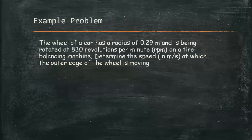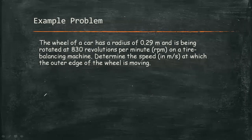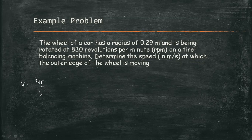Let's have our first example in uniform circular motion. The wheel of a car has a radius of 0.29 meter and is being rotated at 830 revolutions per minute on a tire balancing machine. Determine the speed in meters per second at which the outer edge of the wheel is moving. We are looking for the speed, and we know that speed in circular motion equals 2πr over T, where r is the radius and T is the period. We already have the radius, so we need to find the period.